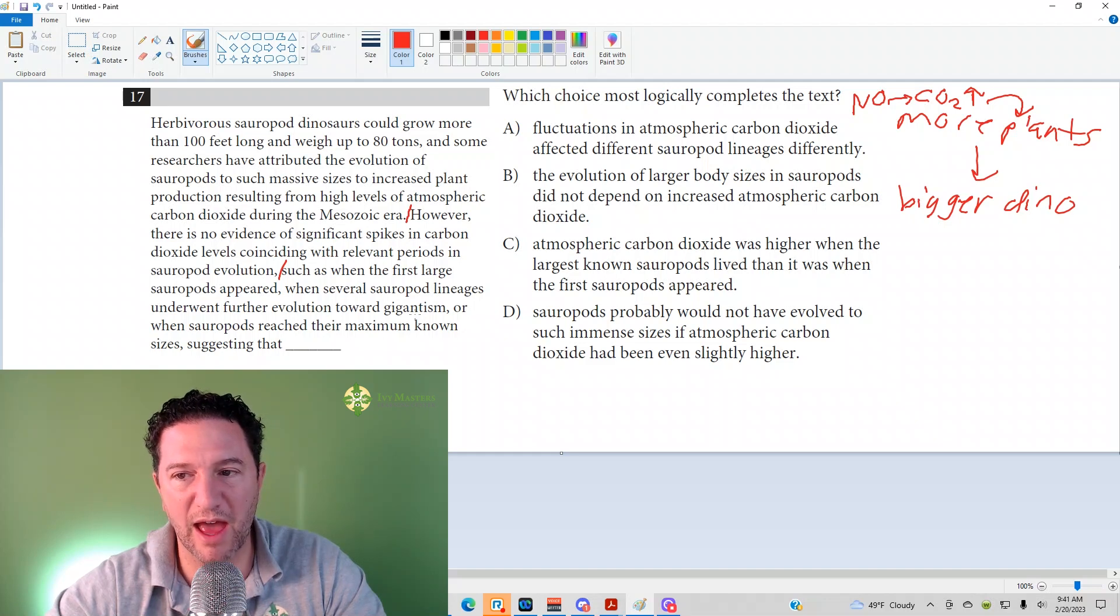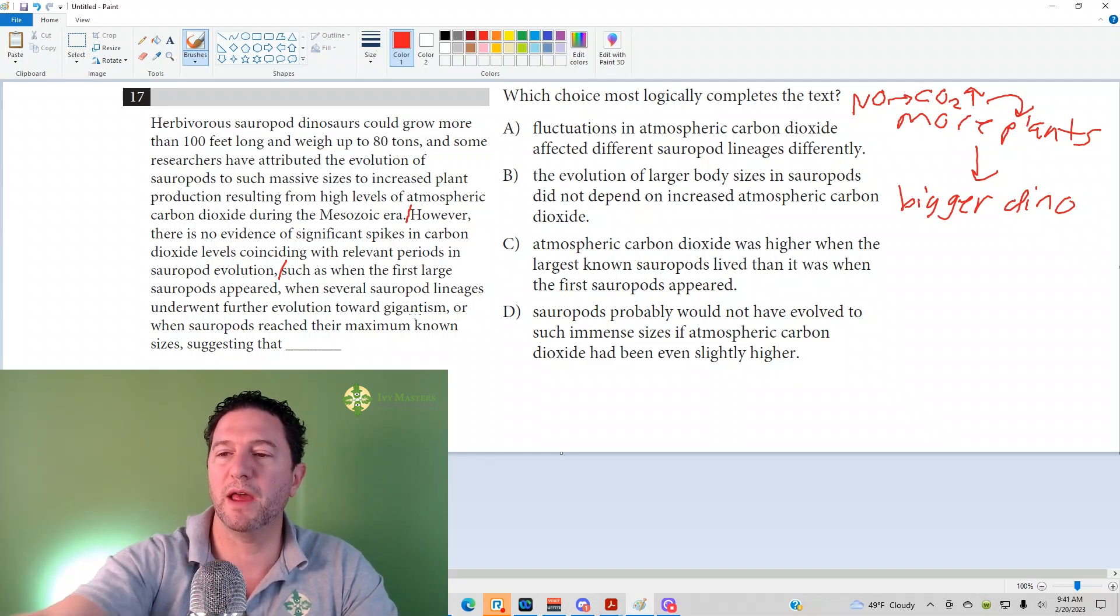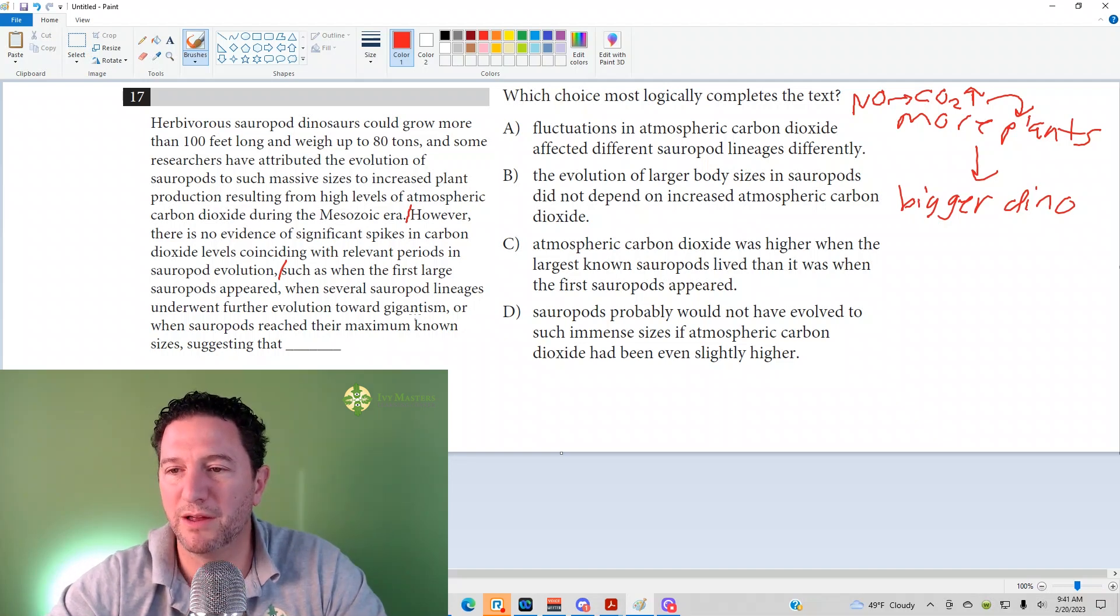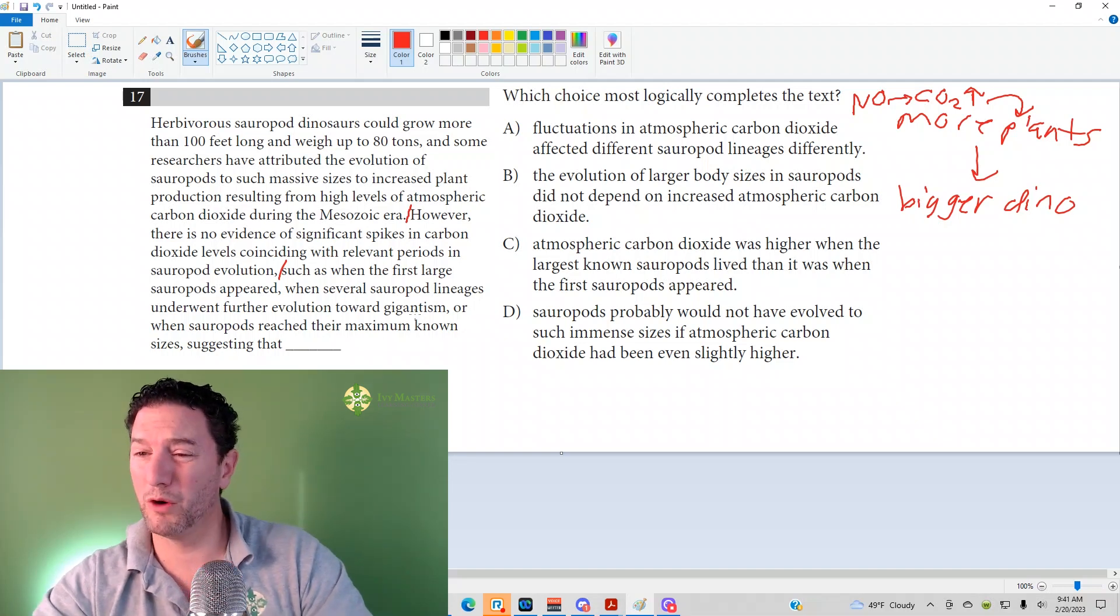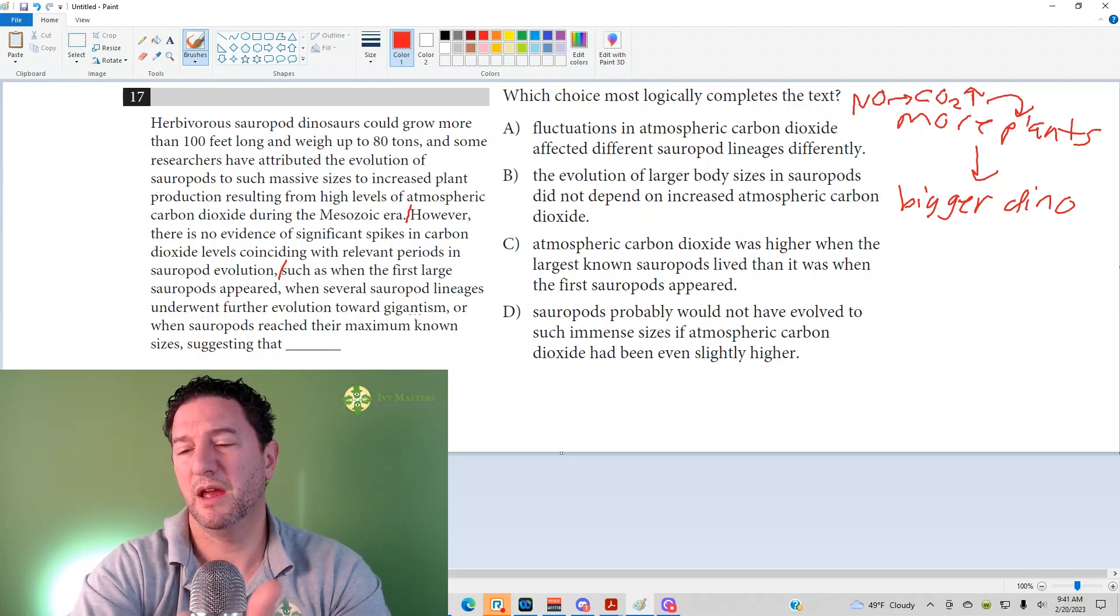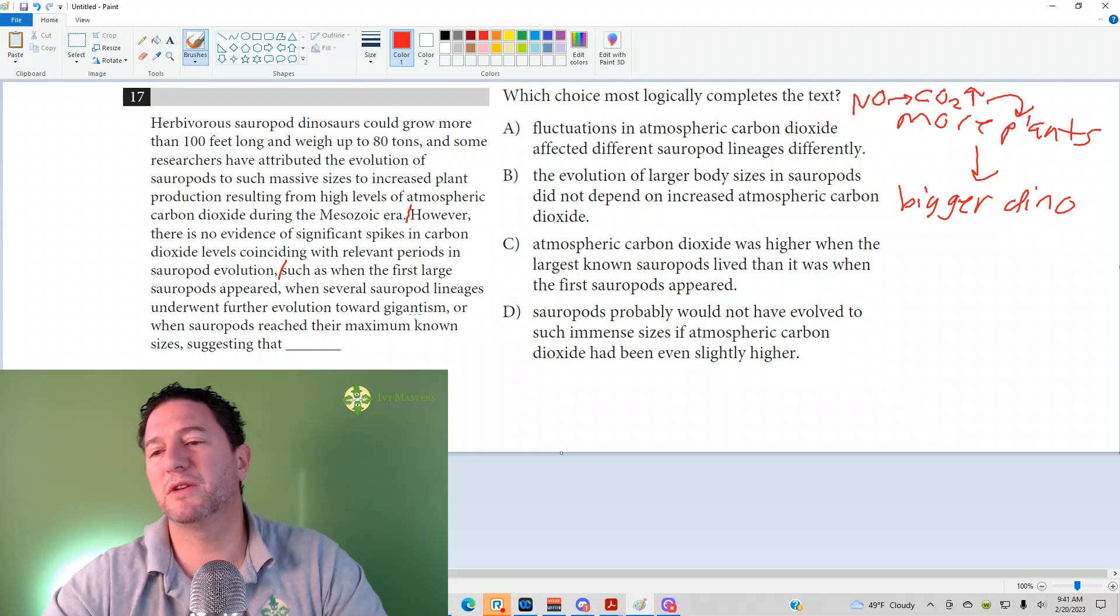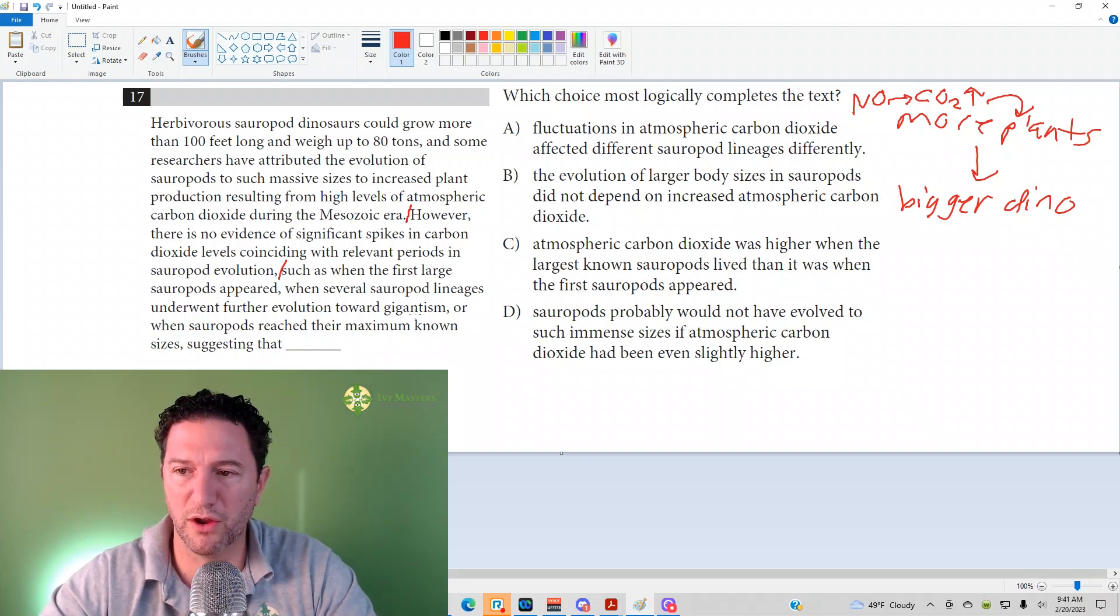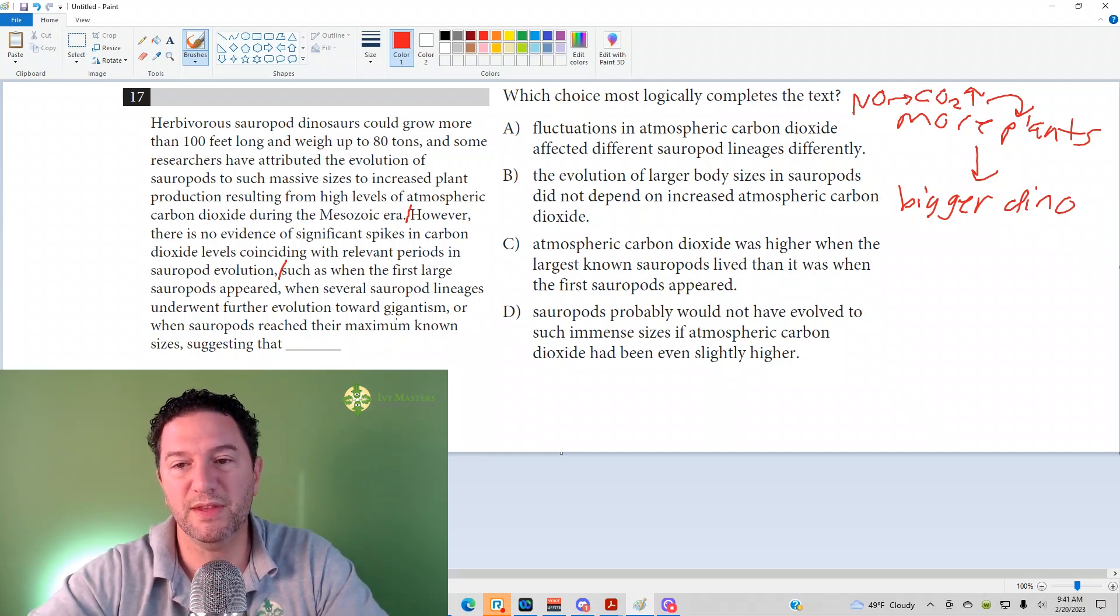Suggesting that, so what's that suggest? If the carbon dioxide levels weren't actually up, that suggests that if there were more plants, it's not because there's increased carbon dioxide levels. And what's that mean? The bigger dinosaur is not because there were increased carbon dioxide levels. We can't make a judgment about plants though. The question is, which choice most logically completes the text?